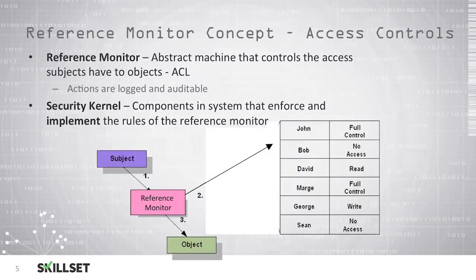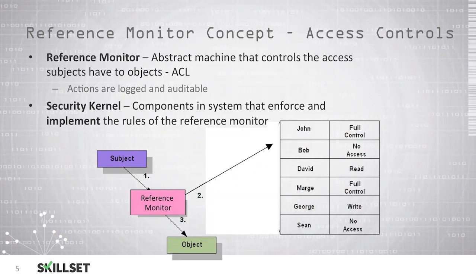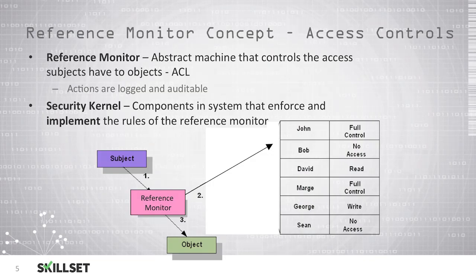We can use reference monitors to control access that subjects would have to objects based on access control lists. When a user accesses an object, we log this activity, which creates an auditable trail that we can use to determine if someone was doing something inappropriate when an incident occurs. A security kernel is the set of components in your system that enforce and implement the rules dictated by the reference monitor.